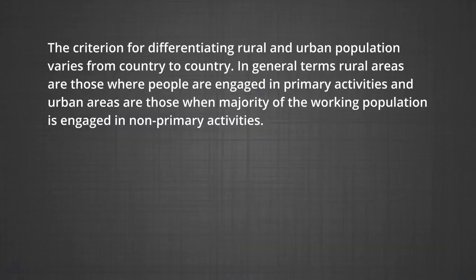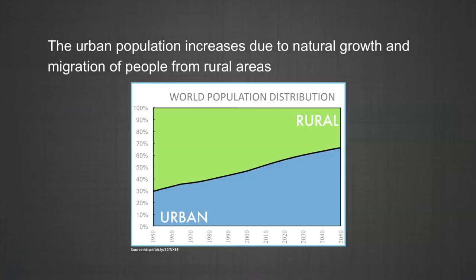The criteria for differentiating rural and urban population varies from country to country. In general terms, rural areas are those where people are engaged in primary activities, and urban areas are those where the majority of the working population is engaged in non-primary activities. People get attracted to migrate to urban areas in search of employment opportunities, better social facilities and high standards of living. The urban population increases due to natural growth and migration from rural areas.